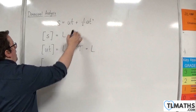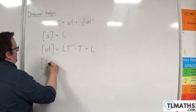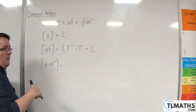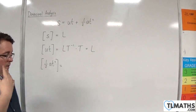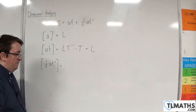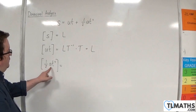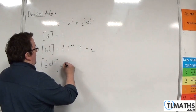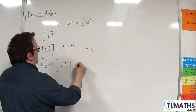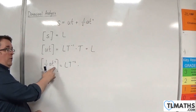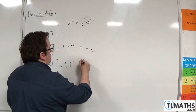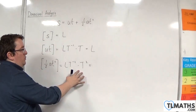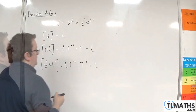So then you've got one half at squared. Now, the half here is dimensionless, so you can ignore that. You've got an acceleration, which is metres per second per second, so that's L times T to the minus 2. And then you've got time squared. The T to the minus 2 times T squared knock each other out, and you're just left with L.